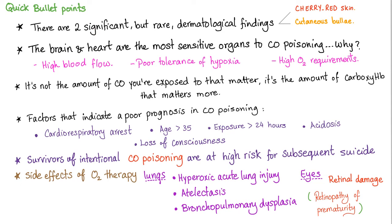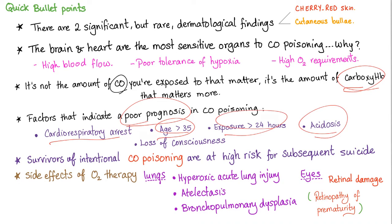Quick bullet points: two significant dermatological findings are cherry red skin and cutaneous bullae. The brain and heart are most sensitive to CO poisoning due to high blood flow, poor tolerance to hypoxia, and high oxygen requirements. What matters is the amount of carboxyhemoglobin, not the amount of CO exposure itself. Factors indicating poor prognosis: cardiorespiratory arrest, old age, exposure over 24 hours, acidosis, loss of consciousness. Survivors of intentional CO poisoning are at high risk for subsequent suicide attempts — the best predictor of future behavior is past behavior.